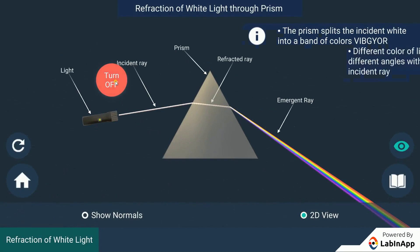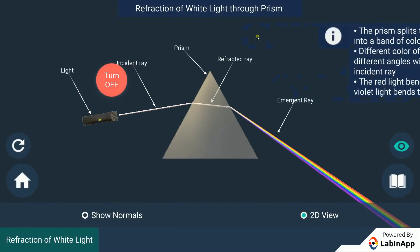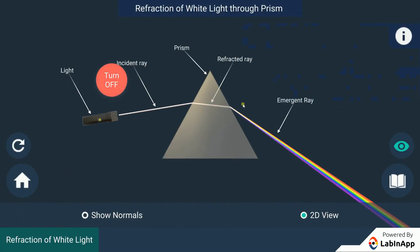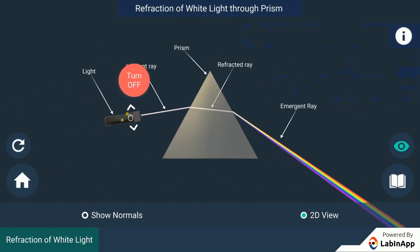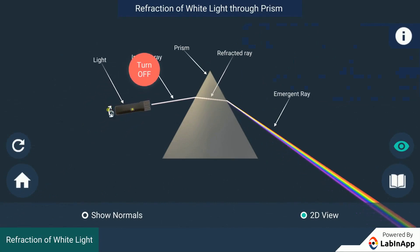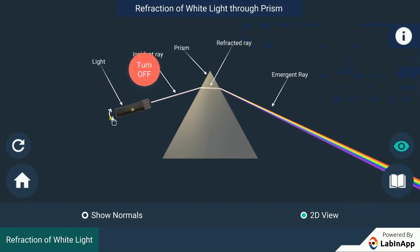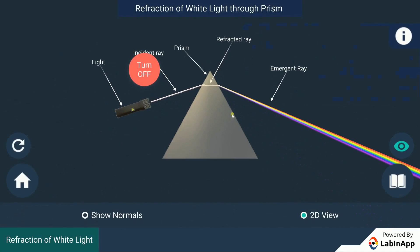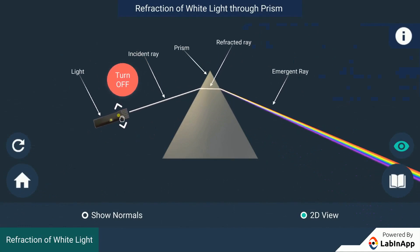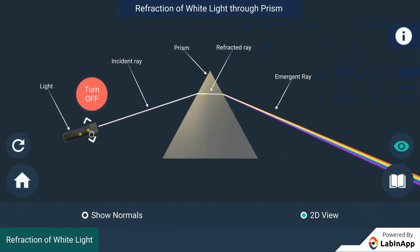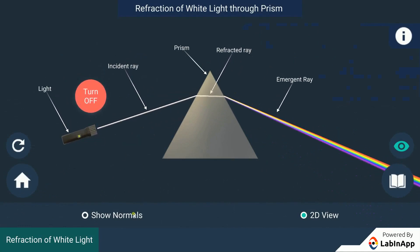The prism splits the incident white light into a band of colours. The various colours seen are violet, indigo, blue, green, yellow, orange and red. The splitting of light into its component colours is called dispersion.